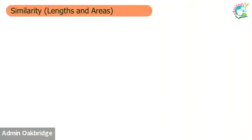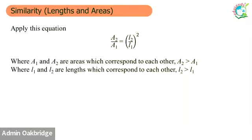Length and areas — which equation should we apply here? We should apply this equation. A2 corresponds to A1, L2 corresponds to L1. In this formula, we have a square for the length, because you take the length squared and you get area. That's why you put the square for the length, not for the area.